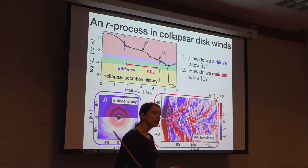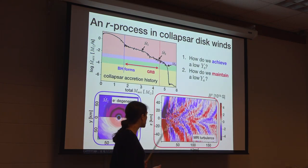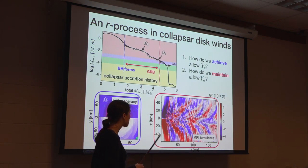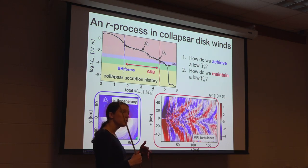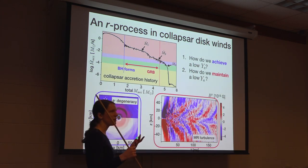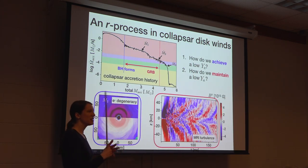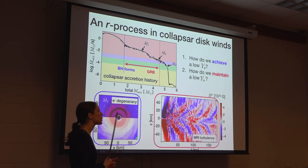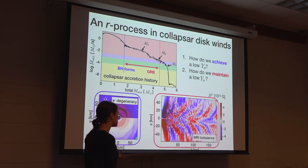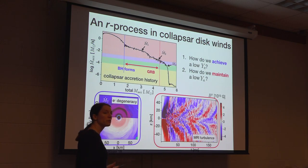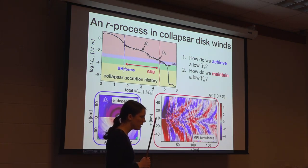In previous simulations, people had looked at unbinding material from the disk through neutrinos. The idea was that material would absorb those neutrinos, absorb their energy, and after enough subsequent neutrino absorptions, the material from the disk would eventually be liberated.